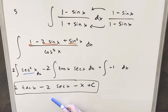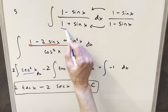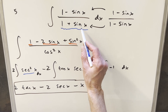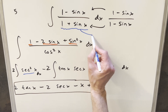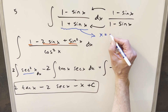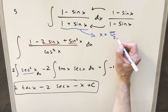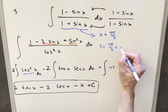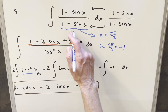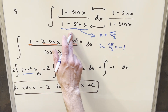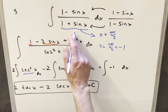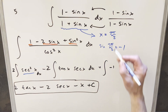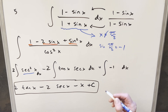Before we finish, one note: this solution is fine and matches the MIT solution, but there is one problem with the domain. Going back to the original integral, when x equals 3π/2, sine of 3π/2 is minus 1, so we're dividing by zero — 1 minus 1 equals 0. So in the original problem, we just say x cannot equal 3π/2.